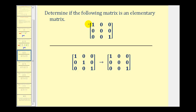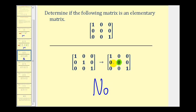Next, we're given this matrix, so we start with the three by three identity matrix and see if we can obtain the given matrix by performing one row operation. Notice the only change is this element here is zero. We might think we can replace row two with zero times row two, but multiplying a row by zero is not an elementary row operation. Therefore, the answer is no — this is not an elementary matrix.